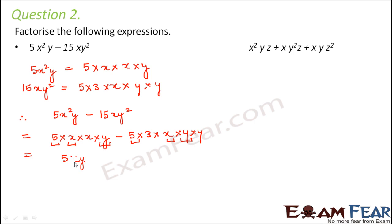This can be written as 5×x×y. What is left inside? In the first term you are left with x. In the second term you are left with 3y. So 5xy(x - 3y) would be the factor form.